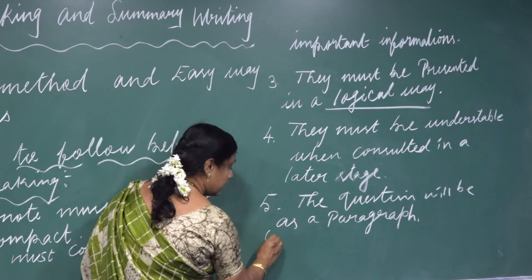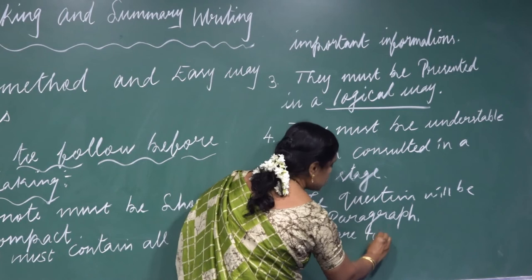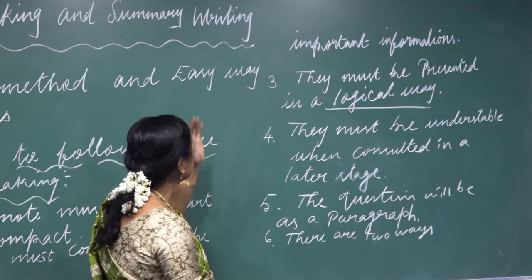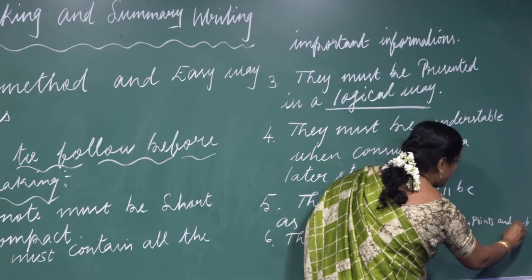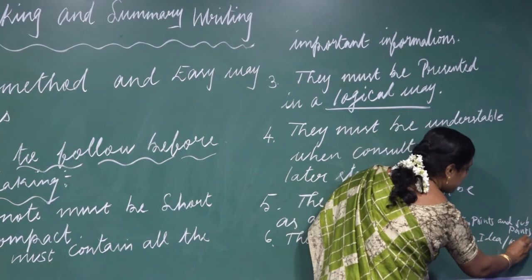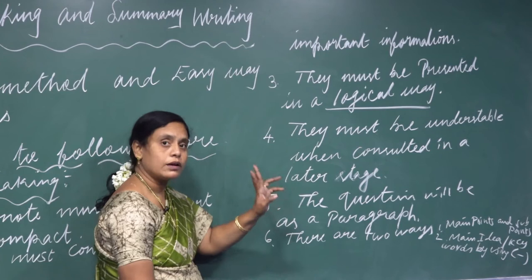The sixth point: there are two ways to write note making. One is taking main points and sub-points. The second is taking the main idea or keywords by using hints. Those are the two ways to write note making.